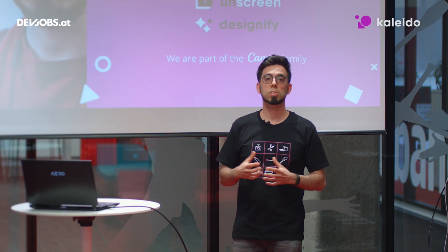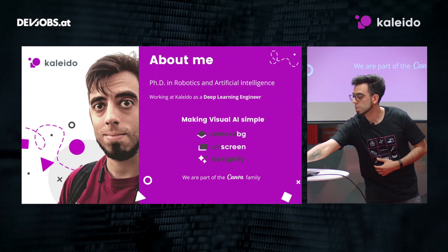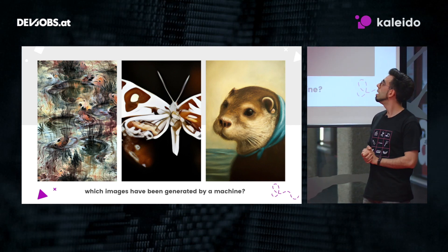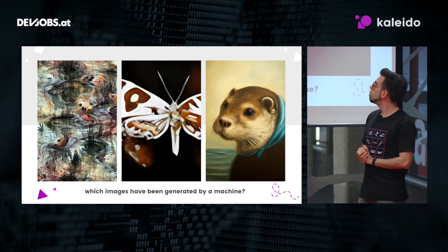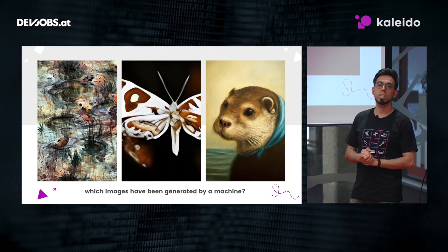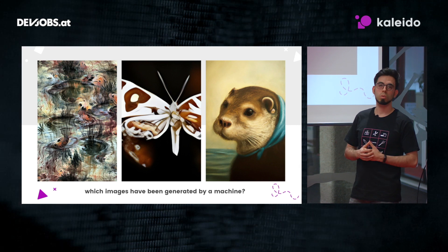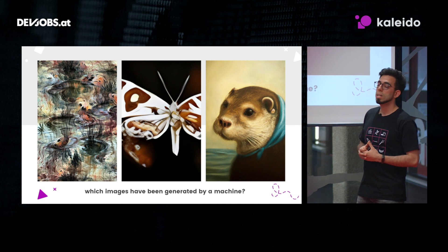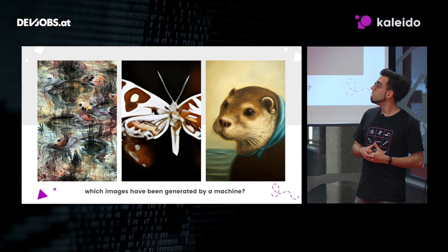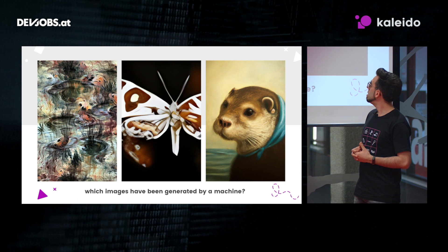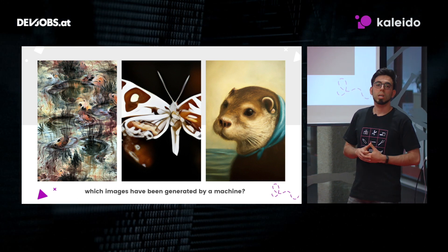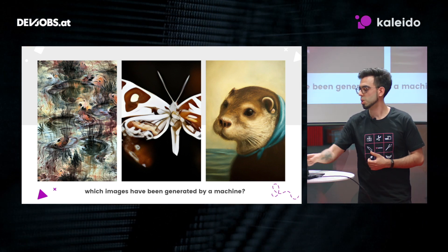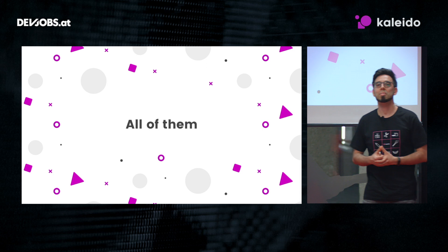To start, I want to play a little game. I'm going to present you with three different images, and I want you to look at them and tell me which of these three have been generated by a machine and which ones have been painted or drawn by hand. Just take a moment, look at the images, and try to figure it out. This is a bit of a trick question — because all of them have been generated by a machine.